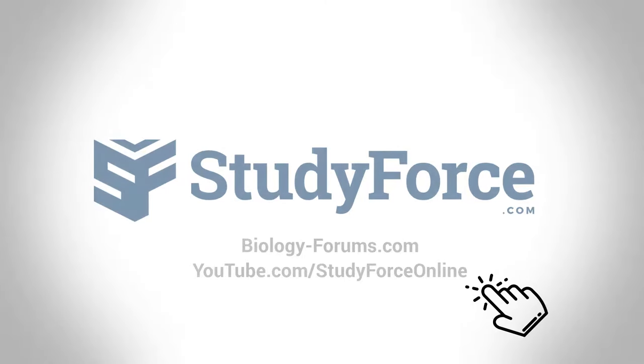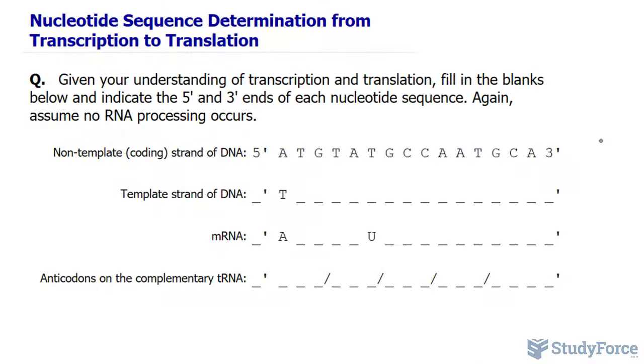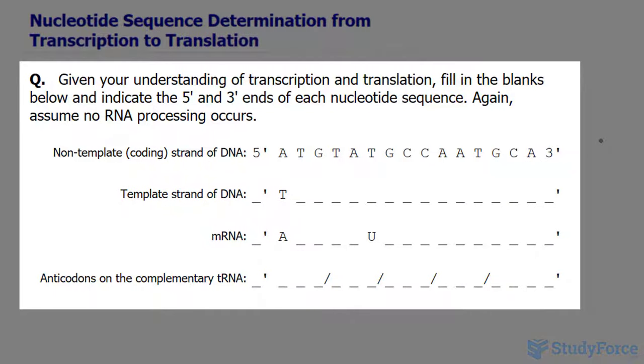In this lesson, we'll look at how to determine the nucleotide sequence from DNA to RNA through transcription and translation. The question reads: given your understanding of transcription and translation, fill in the blanks below and indicate the 5' and 3' ends of each nucleotide sequence.